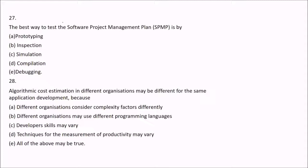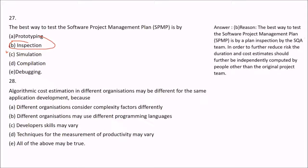Question 27: The best way to test the Software Project Management Plan (SPMP) is by inspection — specifically by the software quality assurance (SQA) team. The SQA team will inspect the SPMP to further reduce the risk of cost overrun or schedule overrun. This should also be independently computed by people other than the original project team.